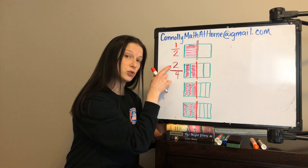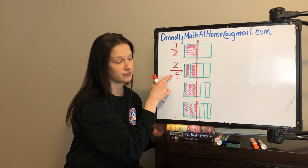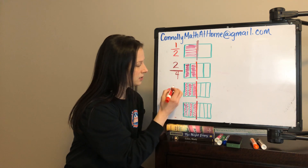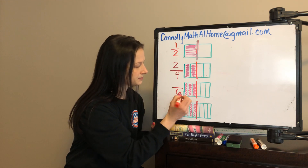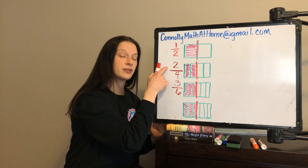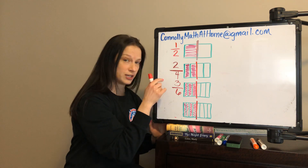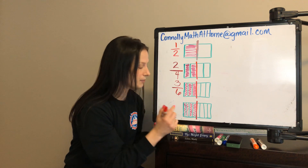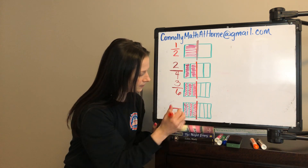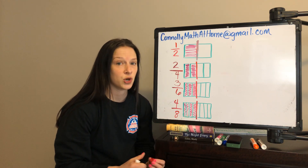Think about the relationship between 2 and 4 — how do we know that's 1 half? Let's look at the next one: 1, 2, 3, 4, 5, 6 — we have 6 parts, and 3 are shaded in. Is there a pattern you're starting to see with the relationship between the numerator and the denominator? And then 1, 2, 3, 4, 5, 6, 7, 8 — 4 eighths are shaded in to show 1 half.